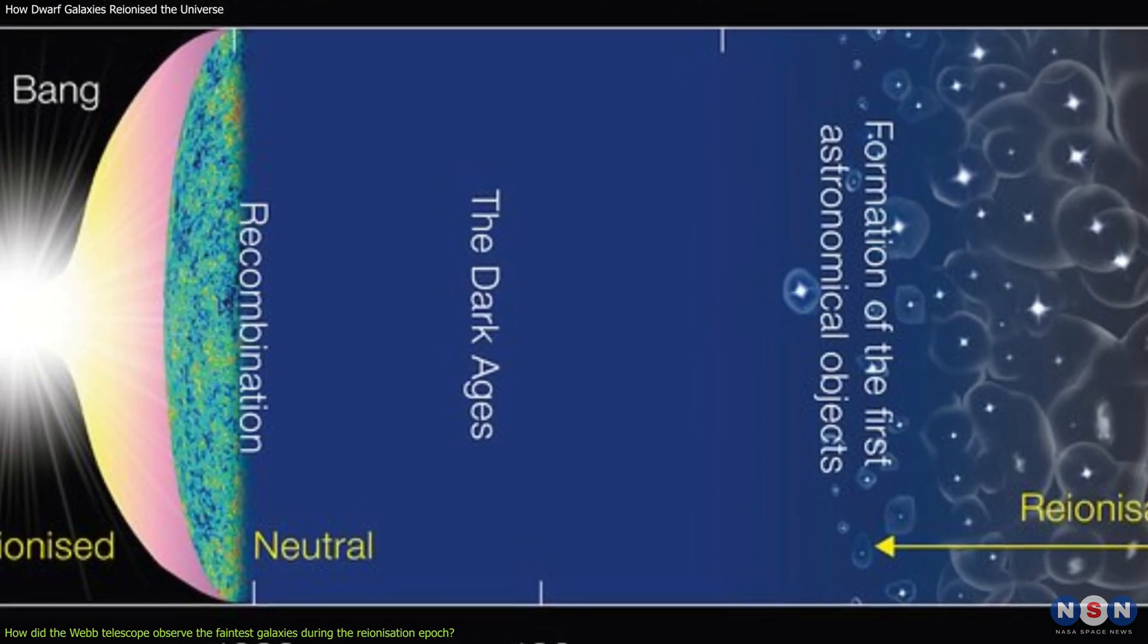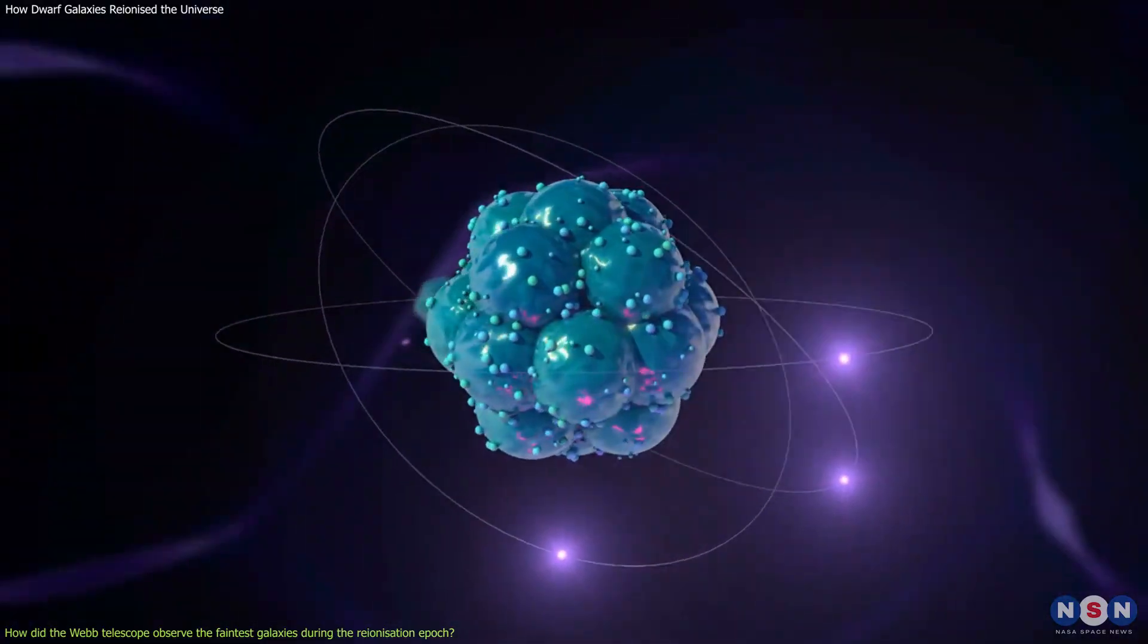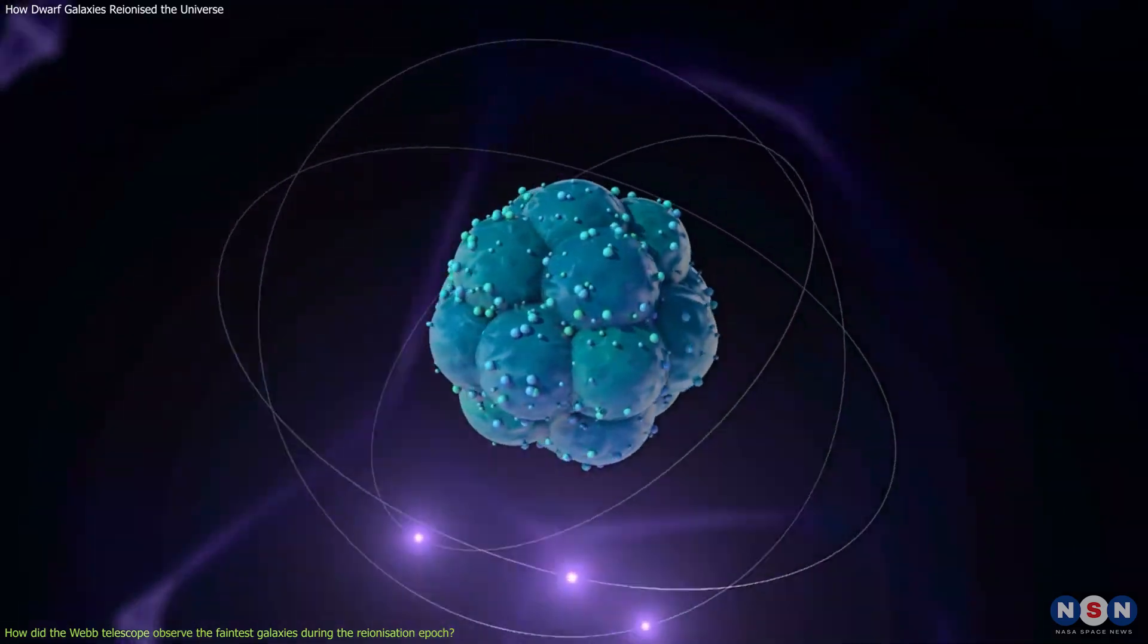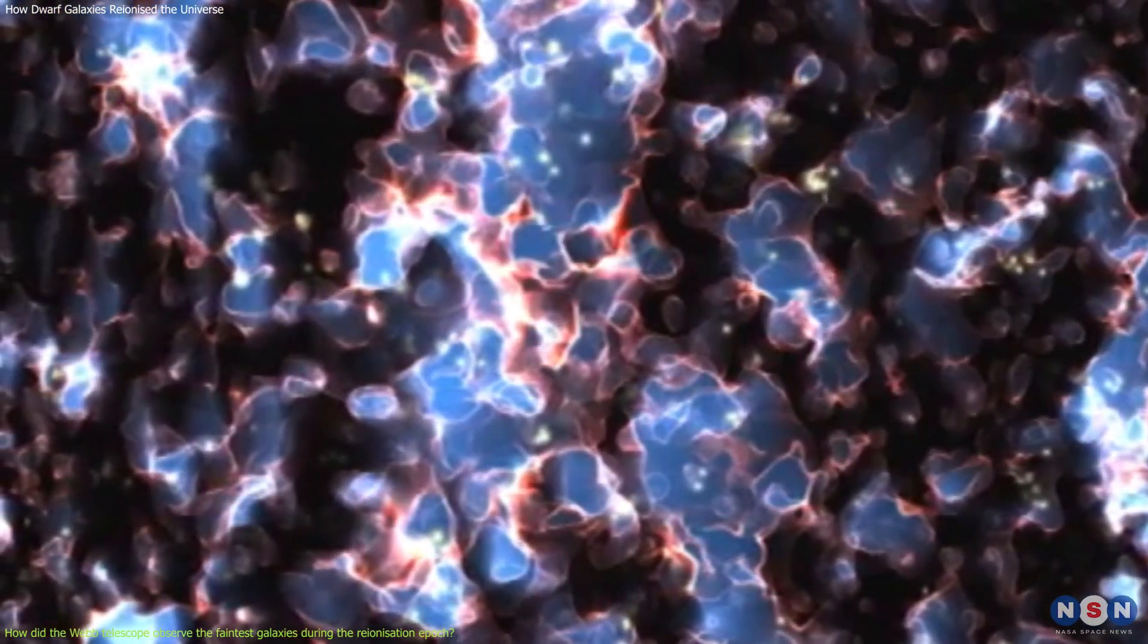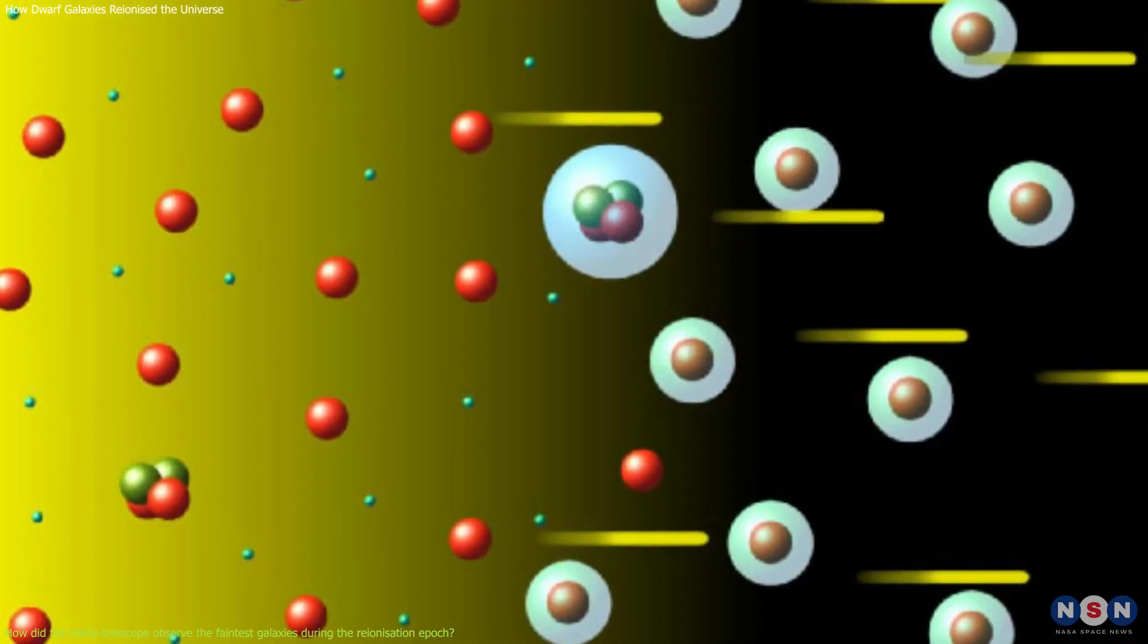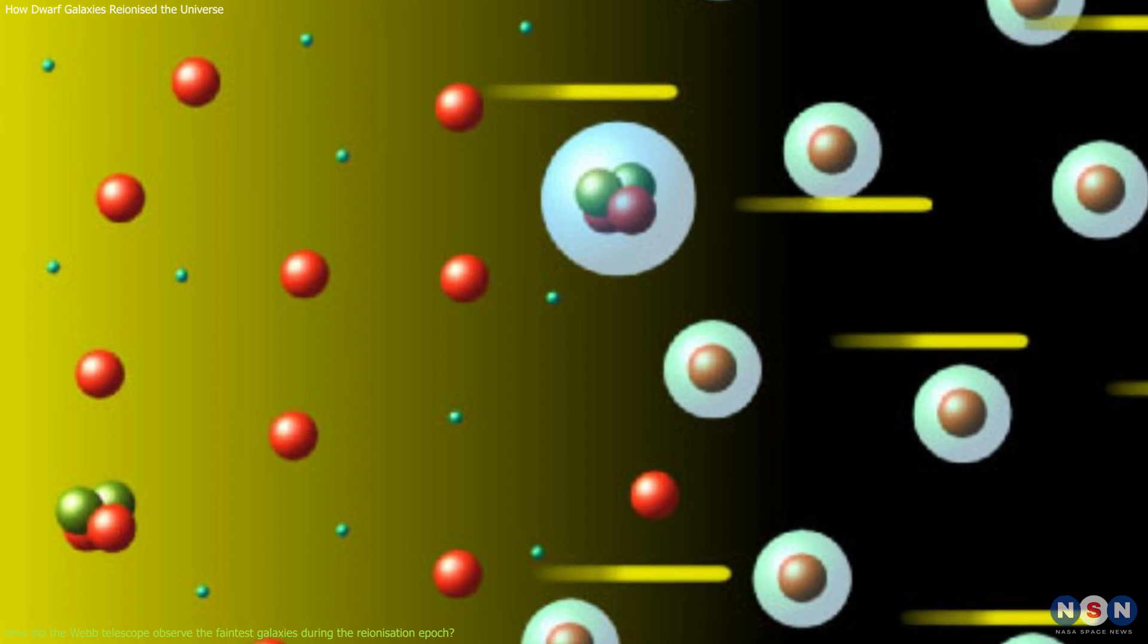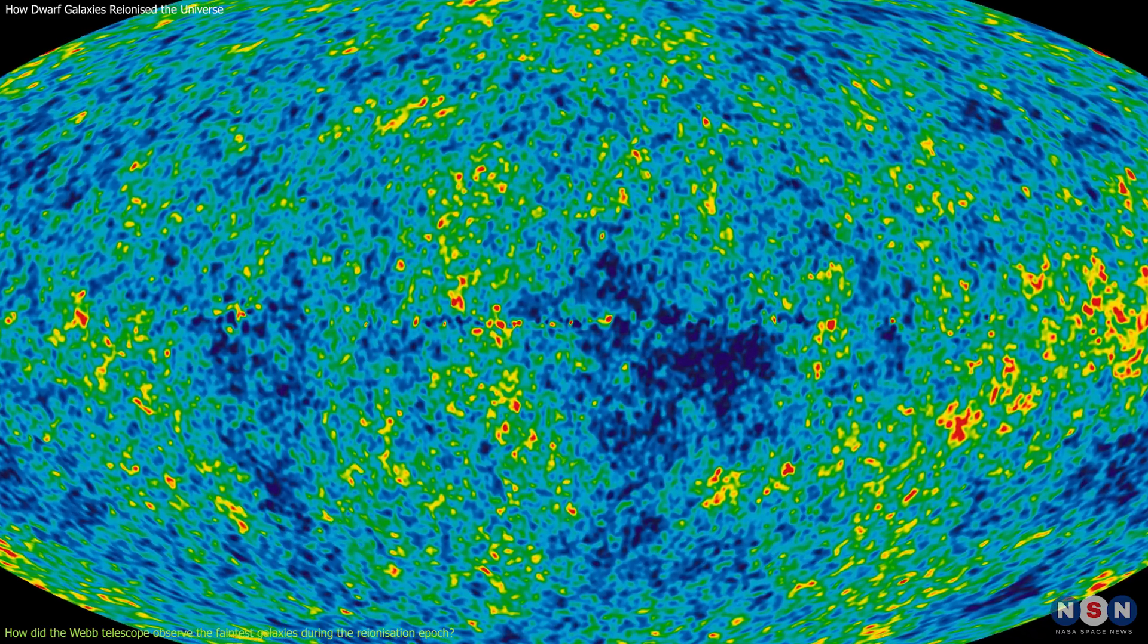But why is ultraviolet light so important for reionization? Well, ultraviolet light has enough energy to break the hydrogen atoms into electrons and protons, creating ionized plasma. This plasma is electrically charged, and therefore interacts with the CMB photons, scattering them in different directions. This is how we can detect the signature of reionization in the CMB.